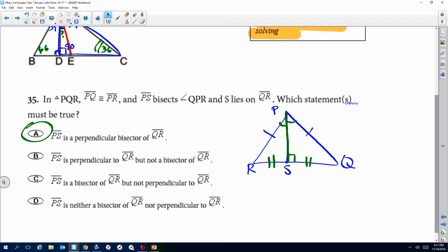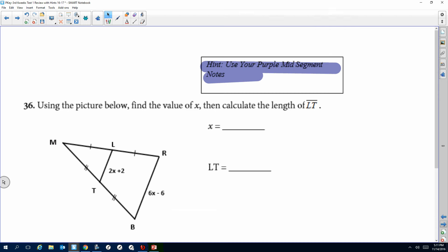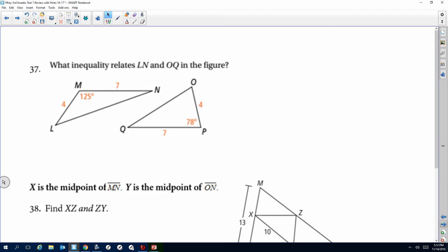All right, so for our last little section here, purple notes to help you, I want to see if you can do these on your own. They're very similar to when we did 30 and 31, so you want to go back and look at your steps on that. Do you want to talk about 37? This is dealing with our inequalities.